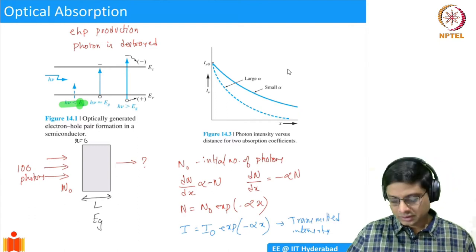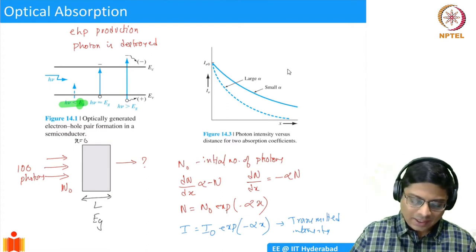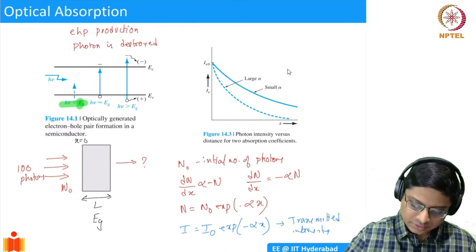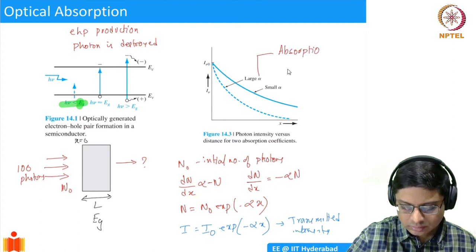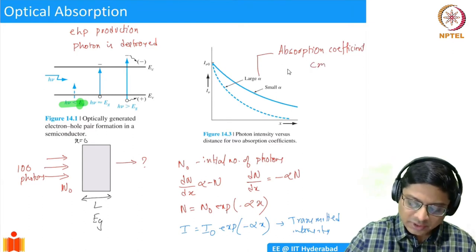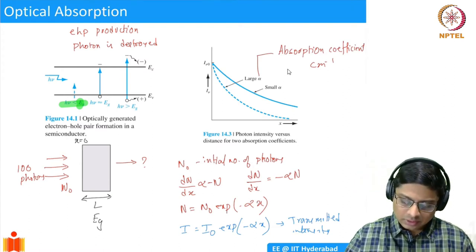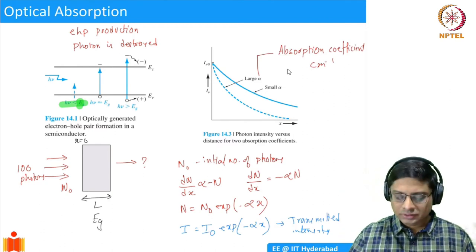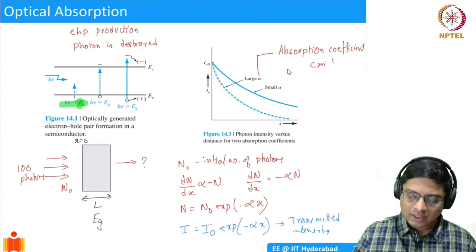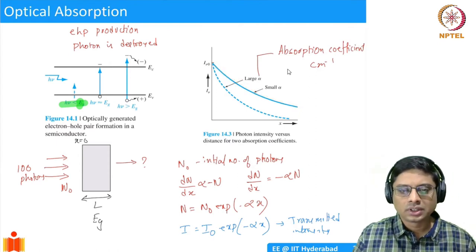We can plot this for two different values of α. This α is called the absorption coefficient, and its units are per centimeter (cm⁻¹). A large absorption coefficient means the number of photons decays faster — the intensity falls quickly. A smaller α means photons travel further before being absorbed.